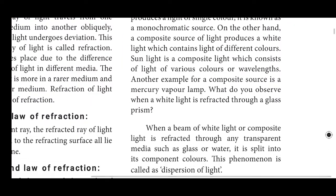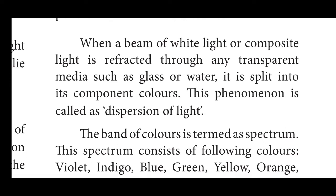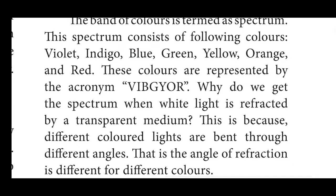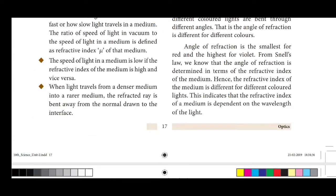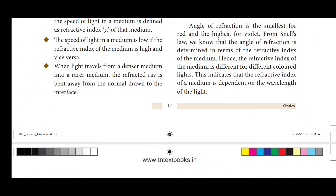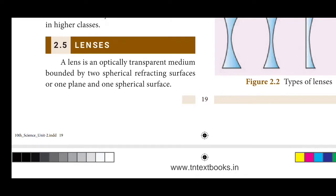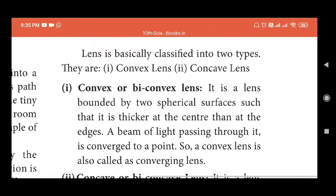Now we talk about the reflection of light and dispersion. When a beam of white composite light passes through a transparent medium such as glass or water, it is split into its component colors — a classic example is a prism or a rainbow. The band of colors formed is called a spectrum — VIBGYOR — Violet, Indigo, Blue, Green, Yellow, Orange, Red.